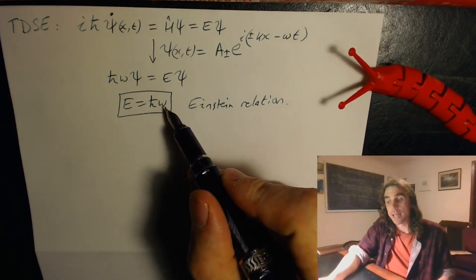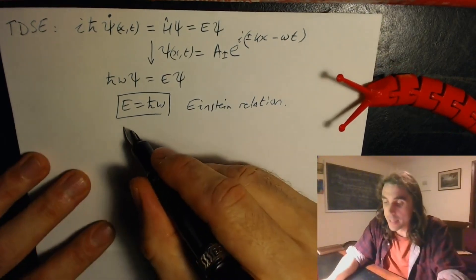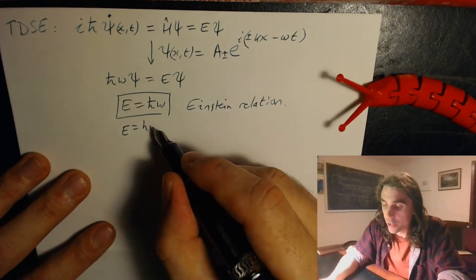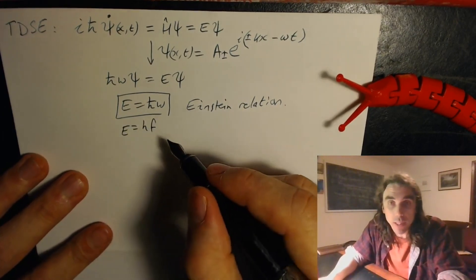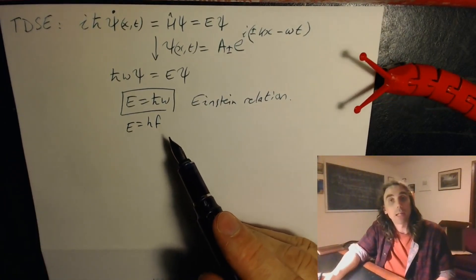Another way to write this is e equals hf where f is the frequency of the photon. Now we're not describing photons with the Schrödinger equation, we're describing non-relativistic massive particles such as electrons, but these obey something like an Einstein relation.